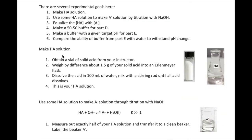The first part is to make an HA, or a weak acid solution. You'll get a solid acid from your instructor, which comes in a vial as shown here. Weigh about one and a half grams of the acid and dissolve it in water in a flask. The volume of the acid solution should be 100 milliliters as measured by a graduated cylinder.